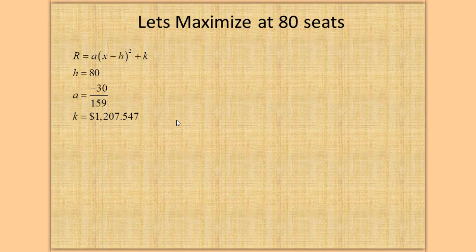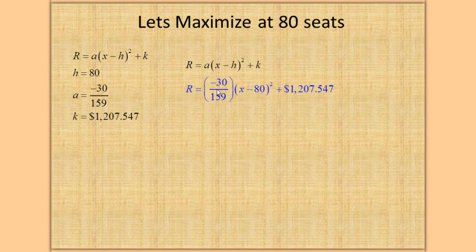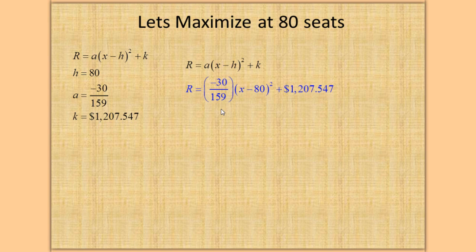Our new vertex equation is R equals A times (X minus H) squared plus K, where A is minus 30 over 159, K is $1,207.54, and X equals 80. So we have the equation maximized at 80 seats.